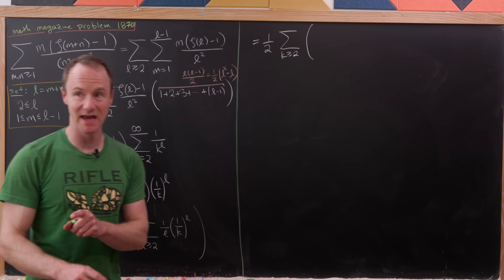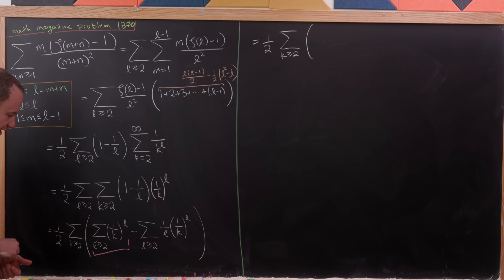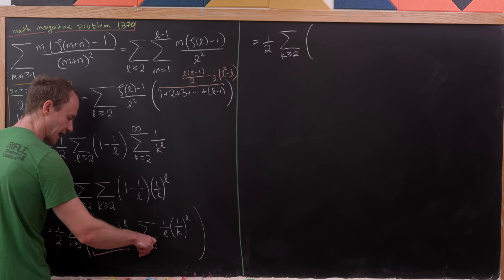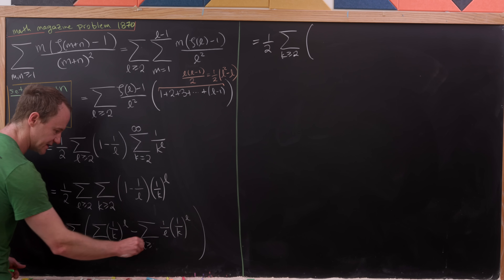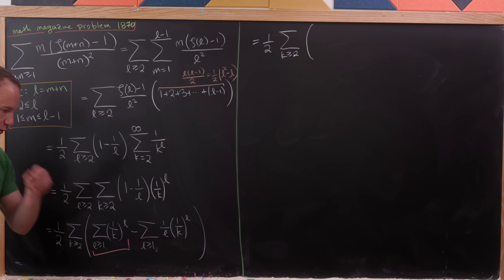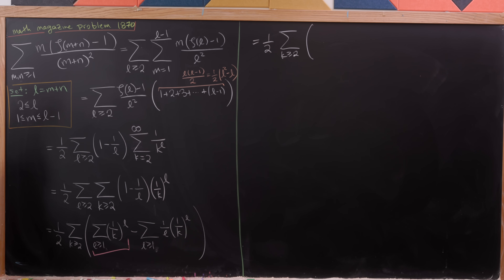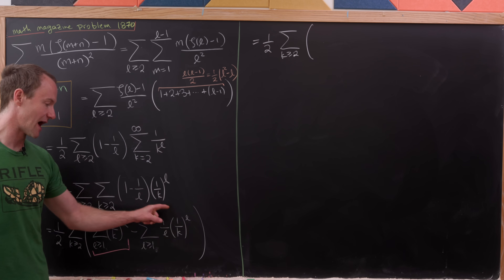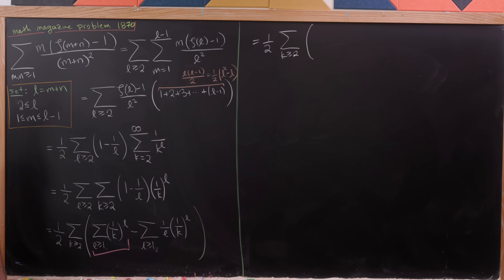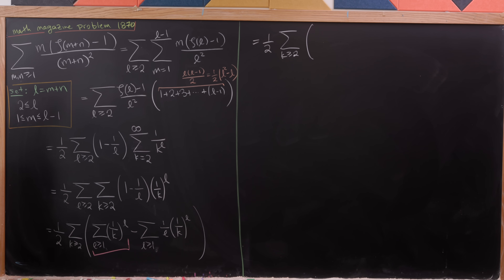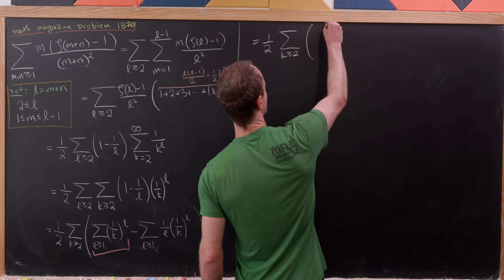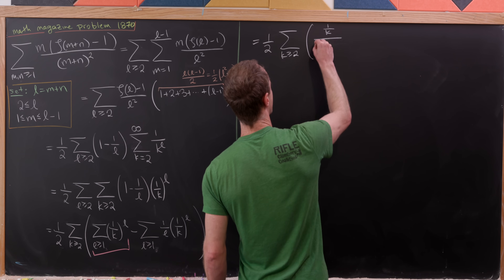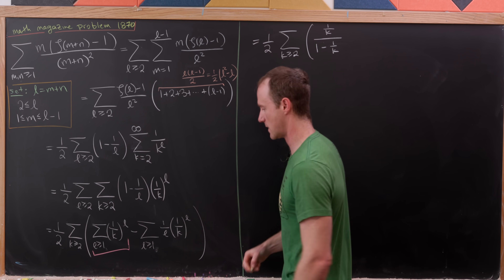Before applying the geometric series formula, we change both sums to start at 1. The l equals 1 terms are identical in both, so they cancel due to the minus sign — meaning we haven't changed anything. Now the geometric series gives us the starting term 1 over k, over 1 minus the common ratio 1 minus 1 over k, which simplifies to 1 over k minus 1.